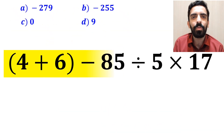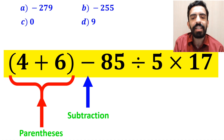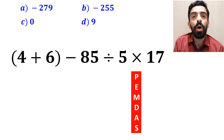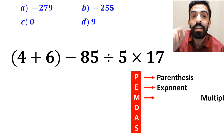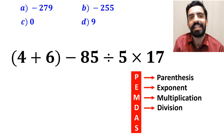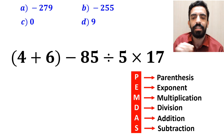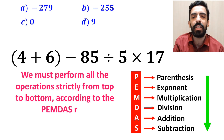Now let me show you how to solve this expression correctly. As you can see on the screen, this expression first has a parenthesis, then a subtraction sign followed by a division, and finally a multiplication. To solve this question we need to follow the PEMNAS rule step by step: P stands for parenthesis, E stands for exponent, M stands for multiplication, D stands for division, A stands for addition, and S stands for subtraction.